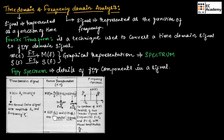So δ(F − F naught) and δ(F + F naught) are impulse signals. To represent this signal graphically, we take frequency on the X axis and the signal on the Y axis. We have a delta function at F = F naught and another delta function at F = −F naught. Both impulse functions have amplitude A naught / 2. This is how we represent the signal graphically.